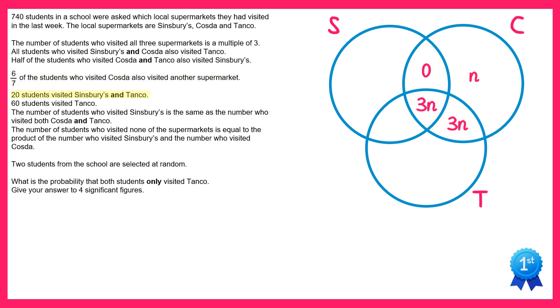Next we're told that 20 students visited Sinsbury's and Tanko. If we look at the overlap between S and T we can see there's already a 3n in one of the sections. Both of the sections must combine to make 20, so if we already have 3n in one of them the other one must be 20 minus 3n.